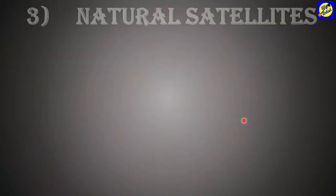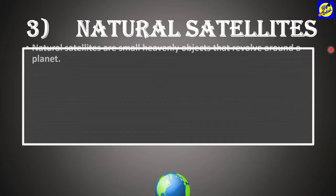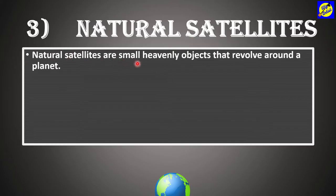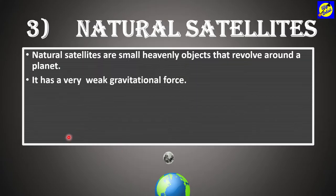Now let us know about the third one, which is natural satellites. Natural satellites are small heavenly objects that revolve around a planet. As you can see, this is the Moon and it is revolving around the Earth. The Moon is the celestial body called the natural satellite, and the Earth is a planet. It has a very weak gravitational force.